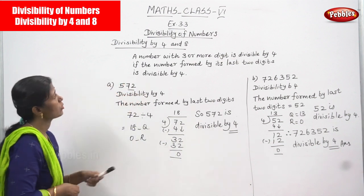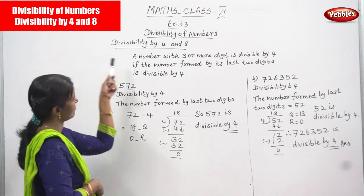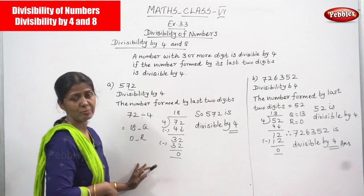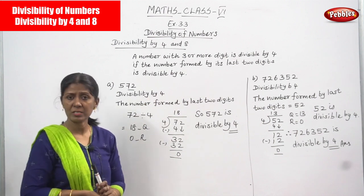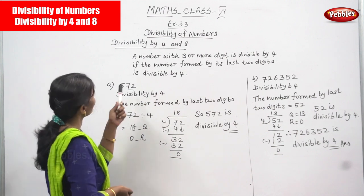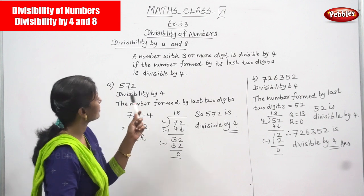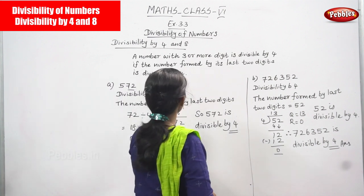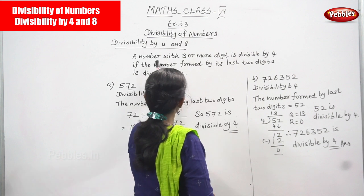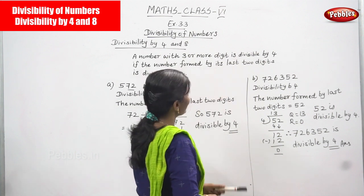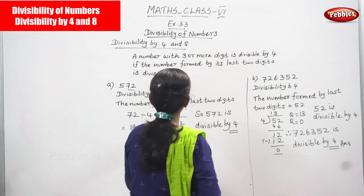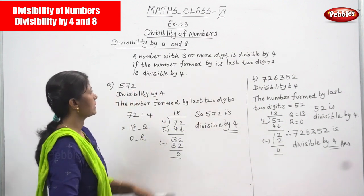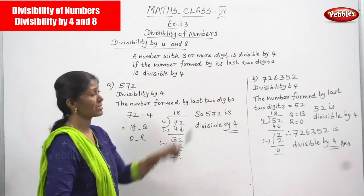Now we are going to see divisibility of numbers — divisibility by 4 and 8. First we are going to see divisibility by 4, then divisibility by 8. A number with 3 or more digits is divisible by 4 if the number formed by its last two digits is divisible by 4, then the entire number is divisible by 4.